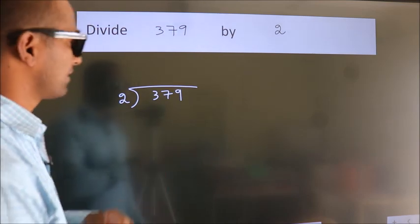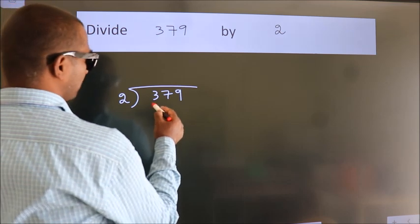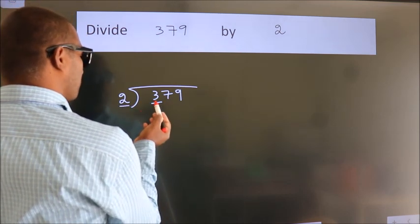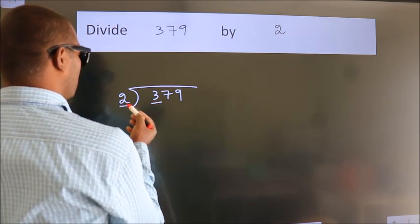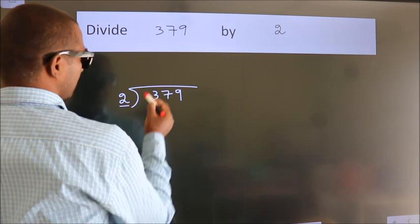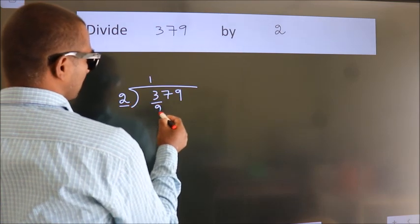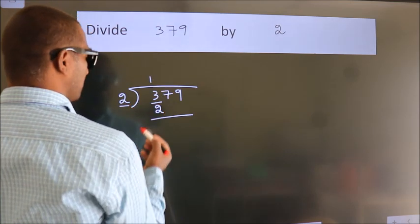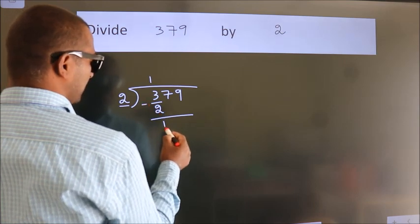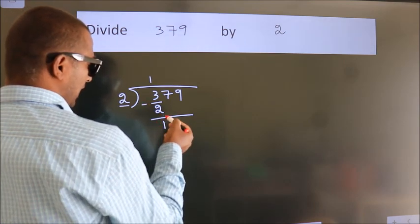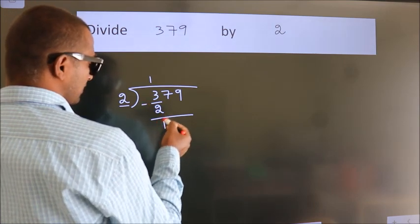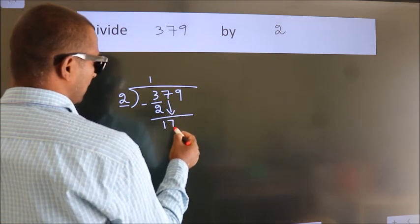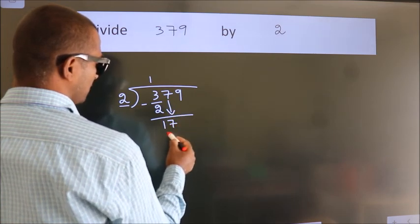Next, here we have 3, here 2. A number close to 3 in the 2 times table is 2 ones, which is 2. Now we subtract, we get 1. After this, bring down the beside number, so 7 comes down, giving us 17.